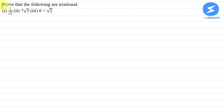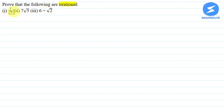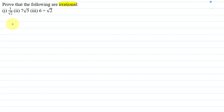Hello everyone, I am your teacher for this question. Let me explain the question to you. The question says: prove the following are irrational. We have three numbers to prove: 1 by root 2, 7 root 5, and 6 plus root 2. So we have to prove that these numbers are irrational numbers. Let's start with the first one: 1 by root 2.